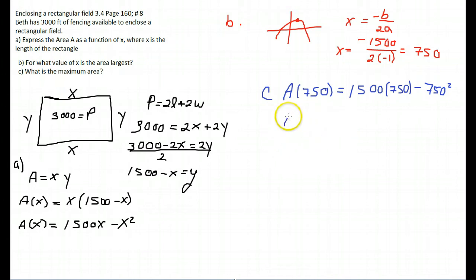When we plug this into our calculator, we end up with 562,500. Since our units are feet, then the maximum area is 562,500 square feet. There we have it. There is the maximum area that we can enclose in our rectangular fence.